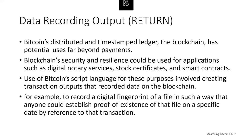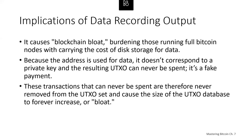Bitcoin is a distributed timestamp ledger whose blockchain has potential uses far beyond payments. Many developers have tried to use Bitcoin scripting to take advantage of its security and resilience for applications such as digital notary services, stock certificates, and smart contracts. Early attempts involved creating transaction outputs that recorded data on the blockchain — for example, recording a digital fingerprint of a file so anyone could establish proof of existence of that file on a specific date by reference to a transaction. The use of Bitcoin's blockchain to store data unrelated to Bitcoin payments is a controversial subject.